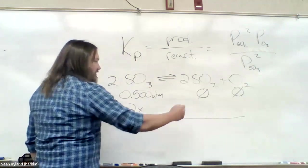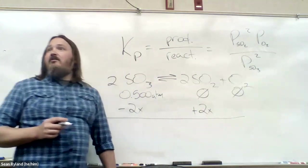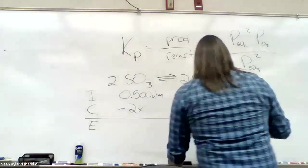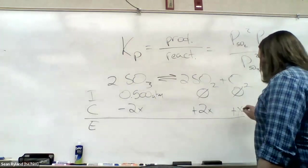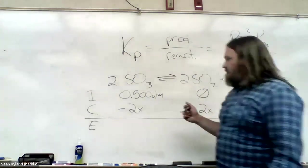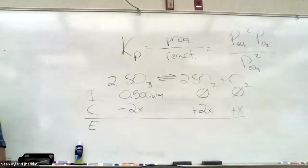What are we writing for our first term in the change column or change row? Minus 2x, good. This should start feeling pretty natural at this point. We've done this enough times. Again, you should be seeing ice tables in your sleep.